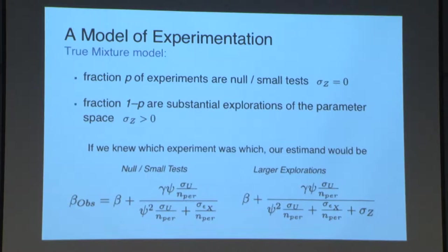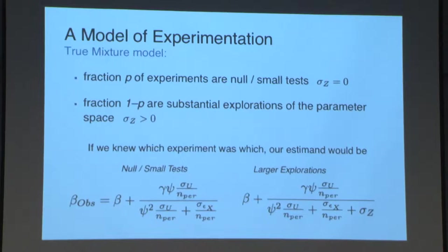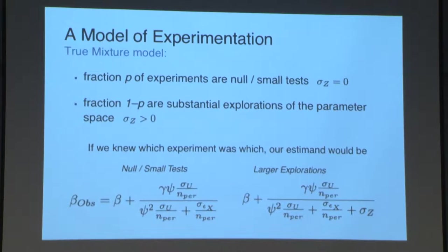We can think of a model with two types of experiments: null or small tests that effectively don't move the endogenous mechanisms, and larger explorations that are substantial moves in the parameter space with much larger variance of z. If we could use just the larger explorations, we'd have lower bias. With an infinite mixture of different variances — for example, if experiments are drawn from a t-distribution — we can in fact eliminate all bias asymptotically as the number of experiments goes to infinity.